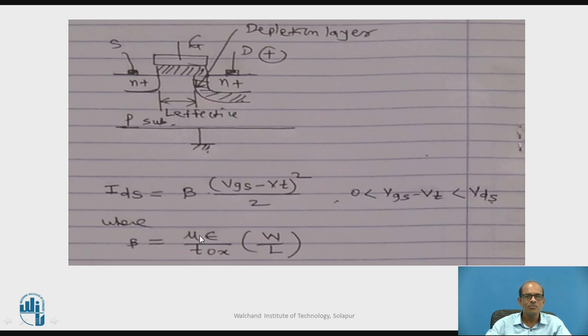Where beta is mu epsilon over TOX times W by L. Where mu is mobility, epsilon is permittivity of the insulating layer, TOX is the thickness of the oxide layer, W is width of the channel, and L is length of the channel.